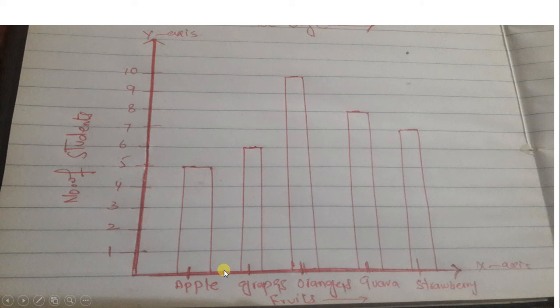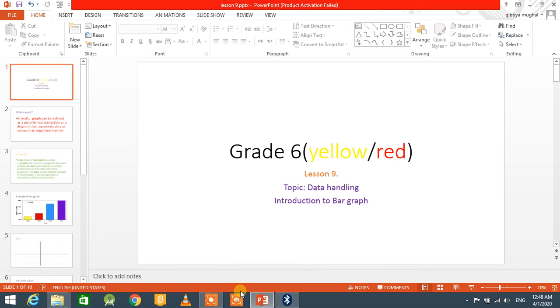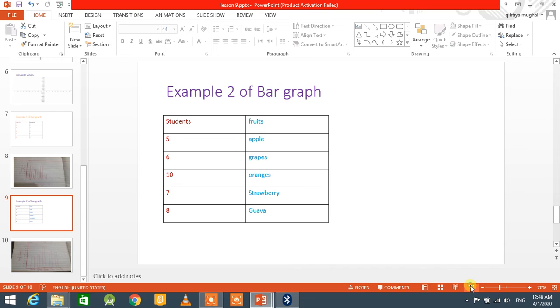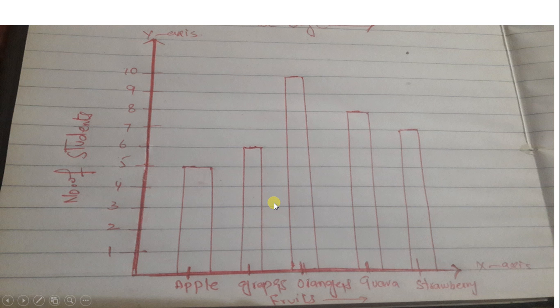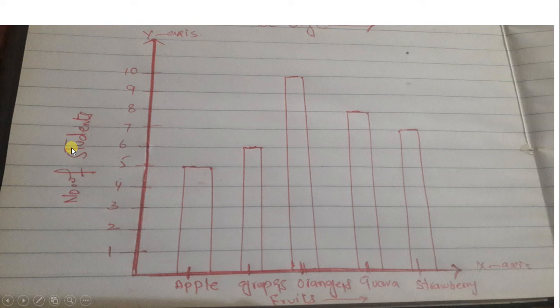We have to see how many students like Apple. Five students like Apple. I will draw the bar until 5. I have to see how many students like Grapes. Six students like Grapes. I draw the bar on Grapes till 6.